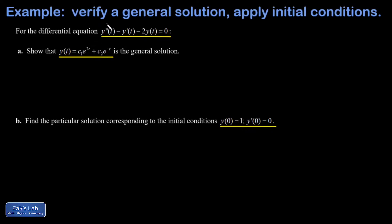So I need to get y double prime, and I need to get y prime, and I need to show y double prime minus y prime minus 2 times y all adds up to zero. So I start taking derivatives.